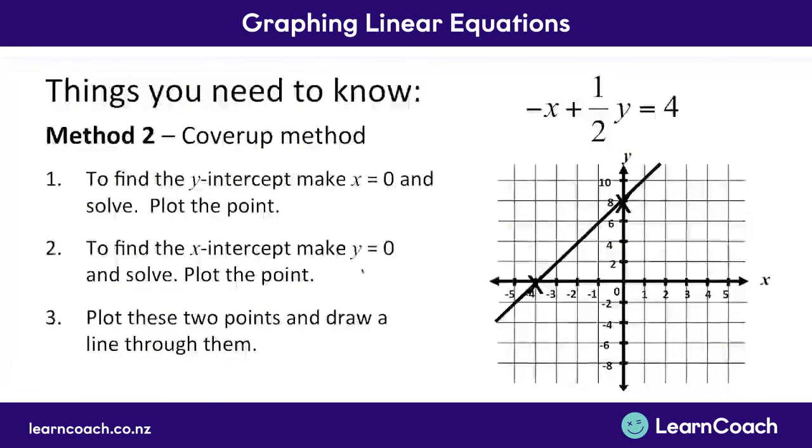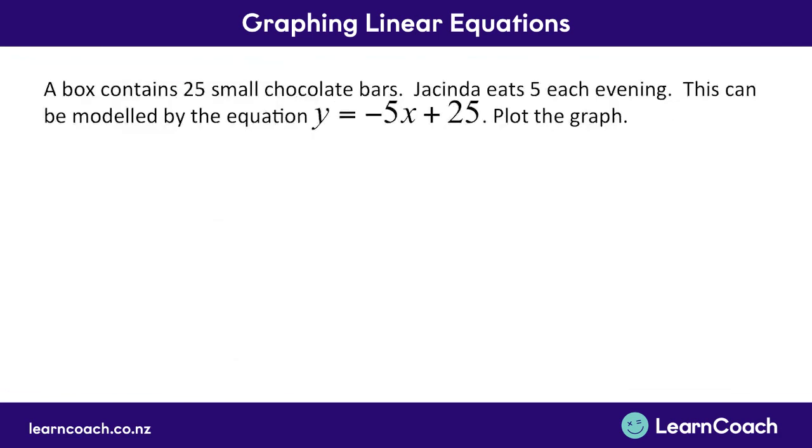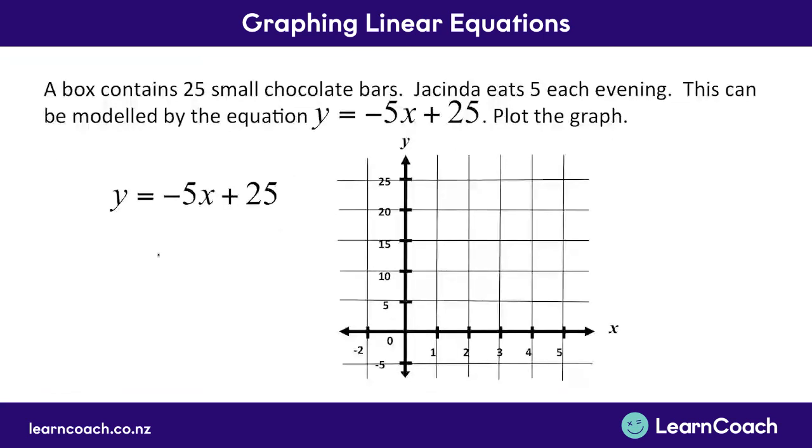Let's look at a question now. In this question, a box contains 25 small chocolate bars. Jacinda eats 5 every evening. Good for you, Jacinda. And this can be modeled by the equation y equals negative 5x plus 25. Our job is to plot the graph. So here we have our equation, we've got our axes. First of all, we start at the y-intercept. We know that's positive 25 because it's been given to us. We plot that.